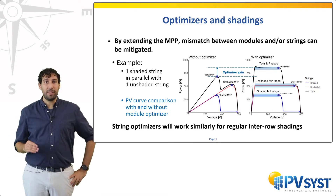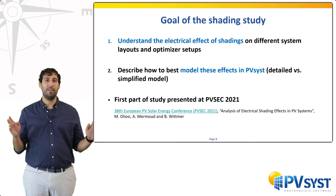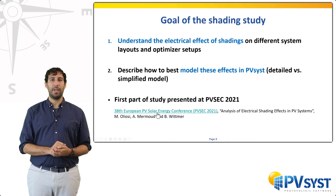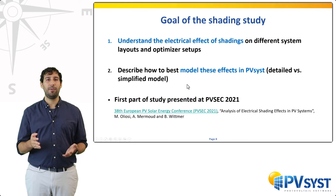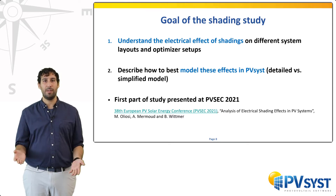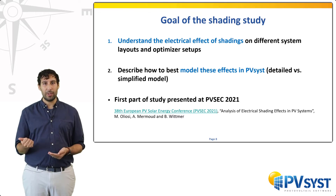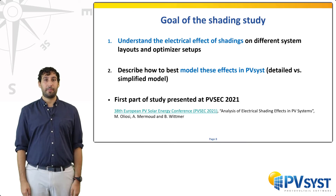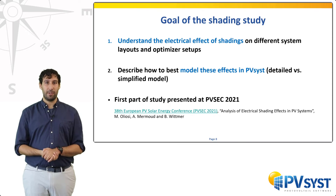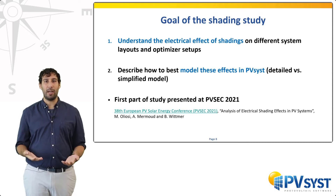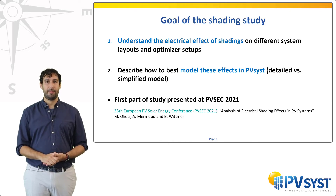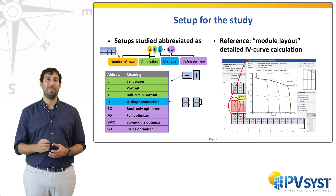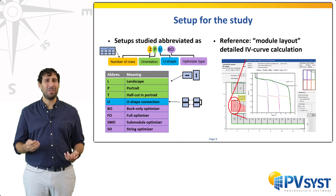With this theory in mind, I will now present our study. The idea is to put the electrical shading effects into a broader perspective by comparing different configurations and choices of optimizers. Our goal is two-fold: we want to understand the behavior under inter-row shadings of different system configurations, and we also want to model these configurations in PVSYST using two models of shadings — the detailed model, used as a reference because it is based on IV curves, and the simplified model, which should be used for large and regular PV systems. We only considered fixed-tilt rows, but the results can be extended to rows of trackers.